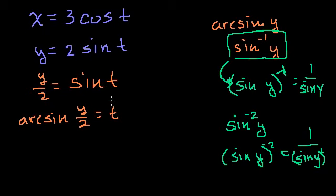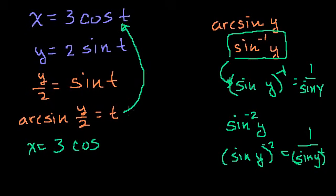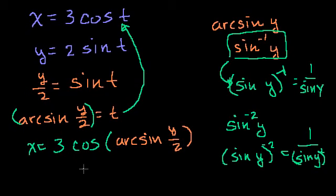Needless to say, let's get back to the problem. So we've solved for t in terms of y. Now we can substitute back here. And we get an expression for x in terms of y. So we get x is equal to 3 times the cosine of arcsine of y over 2. And we have eliminated the parameter, but this is a very non-intuitive equation. But in either way, we did remove the parameter.